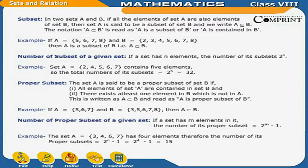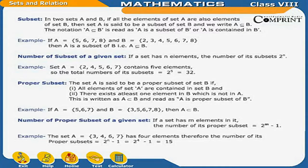Subset: in two sets A and B, if all the elements of set A are also elements of set B, then set A is said to be a subset of set B. We write A ⊆ B, read as 'A is a subset of B' or 'A is contained in B'. For example, if A = {5, 6, 7, 8} and B = {2, 3, 4, 5, 6, 7, 8}, then A ⊆ B.